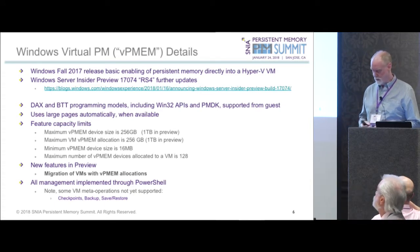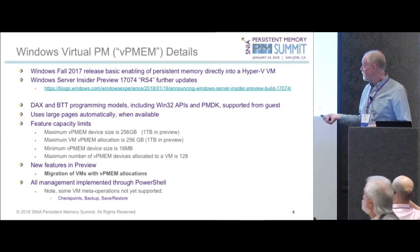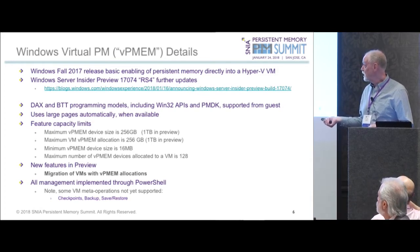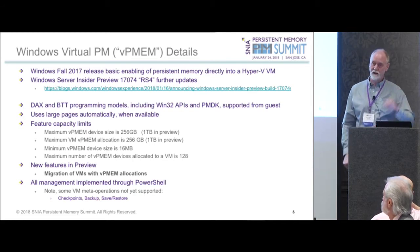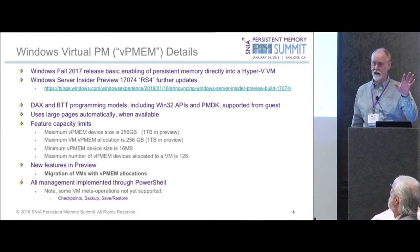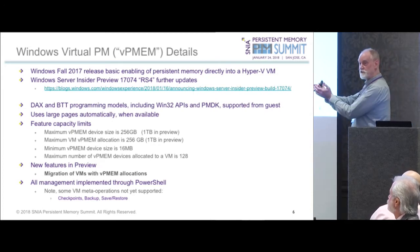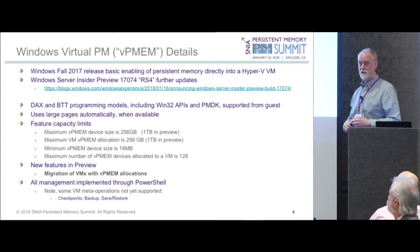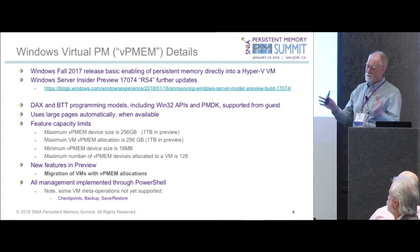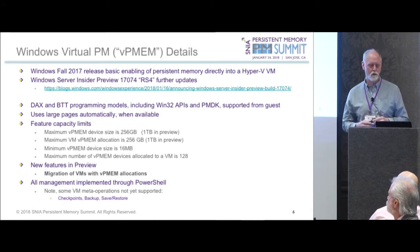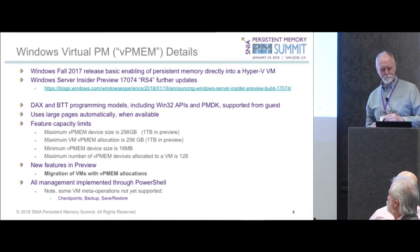New features in preview — this one is really interesting: live migration of VMs with PMM allocations. If I'm migrating from one machine with persistent memory, with a guest using it, to another machine with persistent memory, I can move the persistent memory along with it. This is different from storage migration. This is a new feature, now fully supported.